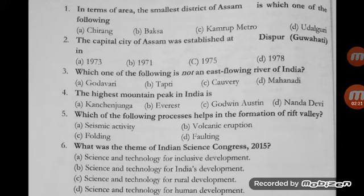The fourth question: the highest mountain peak in India is — Kanchanjangha, Everest, Godwin Austin, or Nanda Devi? The correct option is A, Kanchanjangha. It was ranked as the third highest summit in the world with an elevation of 8,586 meters. It is located at the border of India and Nepal in the Great Himalaya range of Sikkim.